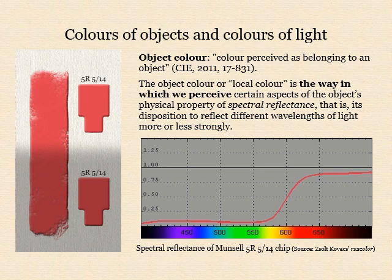Specifically, the lightness of an object is the way in which we perceive its overall reflectance of light, while the hue and chroma are the ways in which we perceive the direction and amount of imbalance among the long, middle, and short wavelength components of this reflectance. A bright red, like 5R 5/14, is the way in which we perceive the reflectance of an object that has a very high long wavelength component and very low middle and short wavelength components.